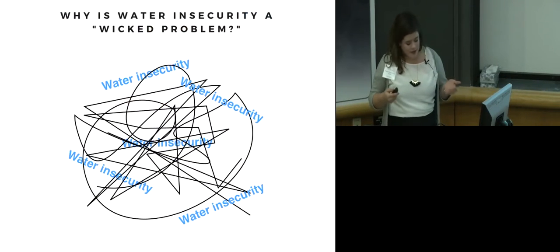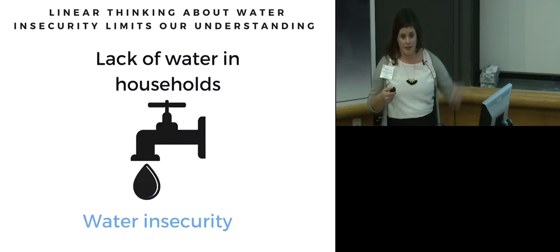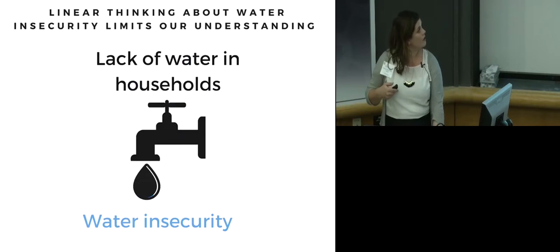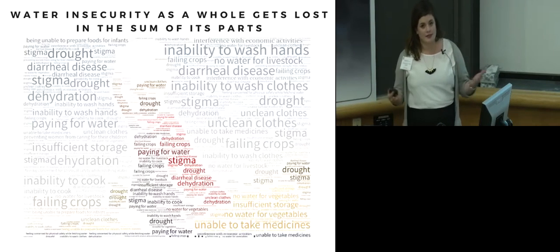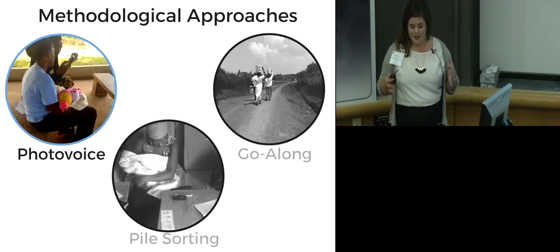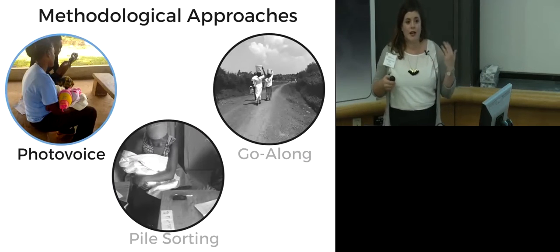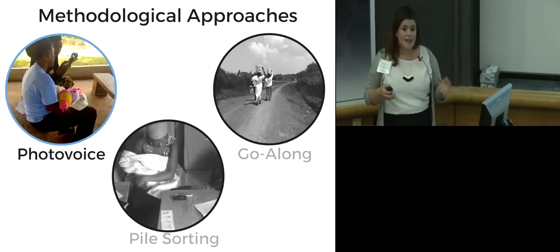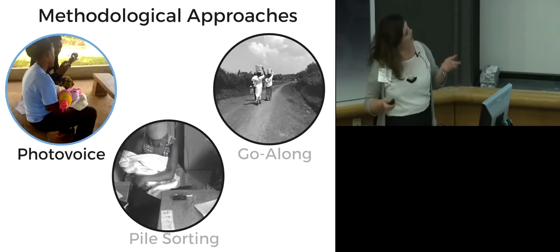So why does water insecurity continue to be a wicked problem? We think it's because approaches to solving water insecurity are often linear, which limits our understanding significantly, or the whole system is lost in the minutiae of the parts that comprise it and the consequences that arise. To better understand how water insecurity affects individuals at the household level and the day-to-day experiences of women — who are primarily responsible for the majority of water-related tasks in places like Kenya, where my work is based — we used three methodological approaches.